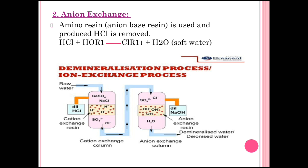In the anion exchange resin, the HCl that was formed is now treated. Here R is the resin, and a hydroxide structure is used as the anion exchange resin, playing the role of an anion exchanger. Whenever the anion exchange resin dissociates, it splits into R⁺ and OH⁻. The resin then captures the anionic impurity present in the water. In the product, RCl precipitate is formed in water, and the remaining H⁺ and OH⁻ combine again to form H₂O.